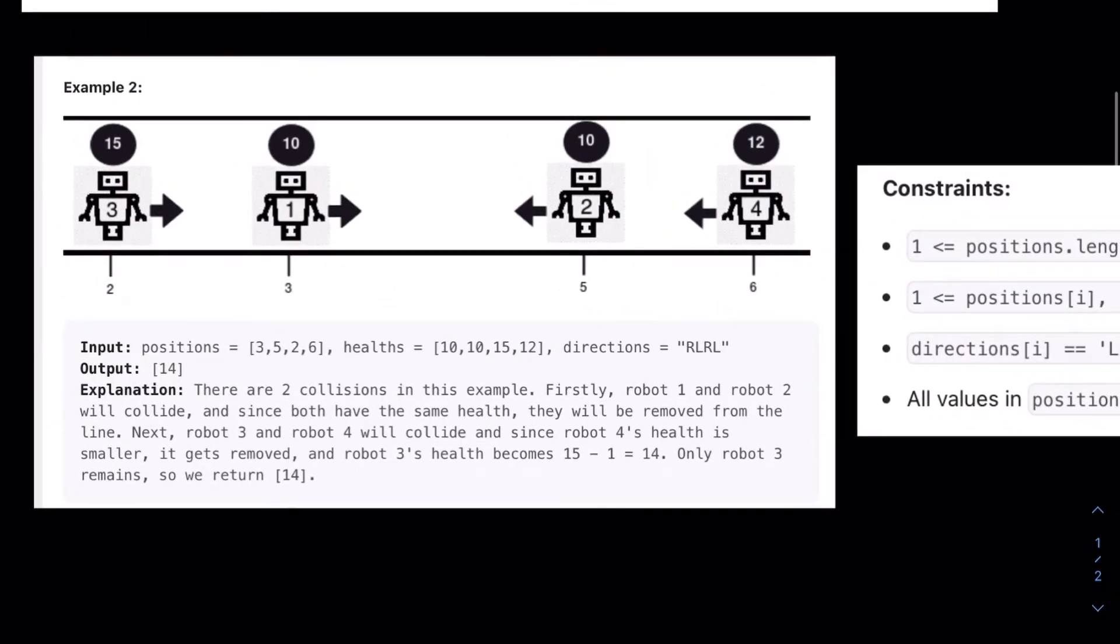Taking a look at our very first example, we have these positions. Note that they aren't in order along the number line. But nonetheless, this robot at index 3 is 10 HP and has a direction going right. And looking at this example, what's going to happen is these two will crash, they will collide.